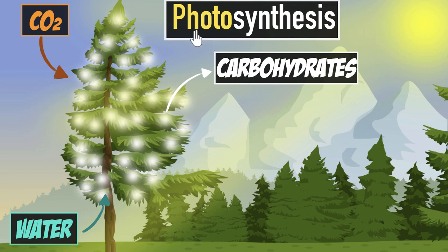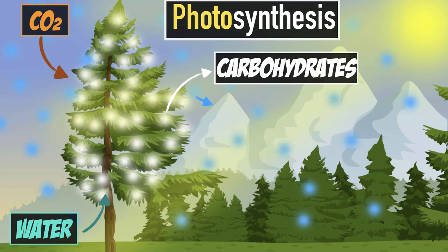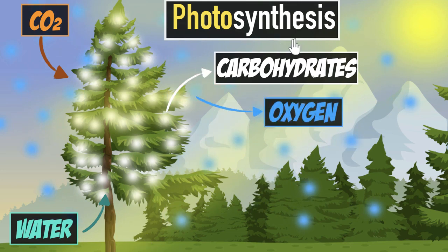This means photosynthesis feeds almost all living things on this planet. And on top of that, there's a bonus: during this process, the plants kick out a particular molecule into the atmosphere — oxygen. So photosynthesis gives us carbohydrates as food and oxygen to breathe. That's why photosynthesis is so remarkable.